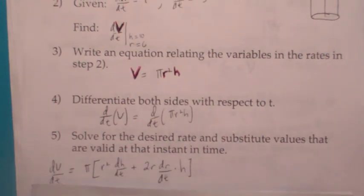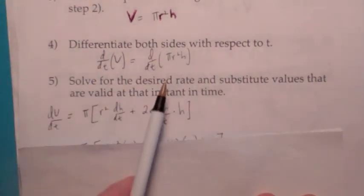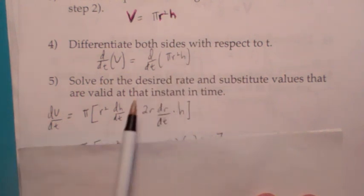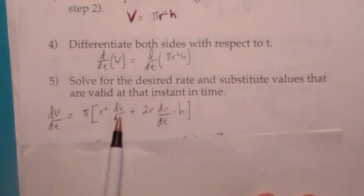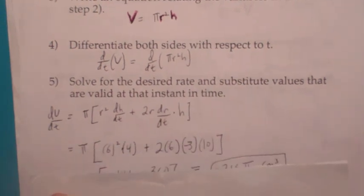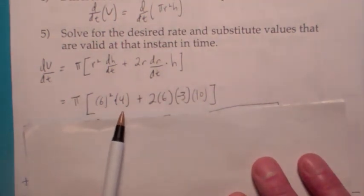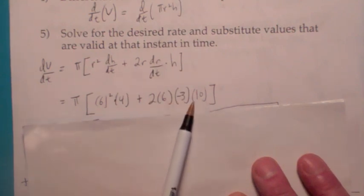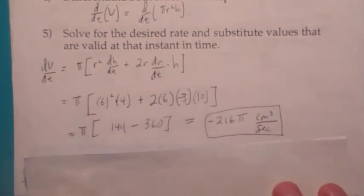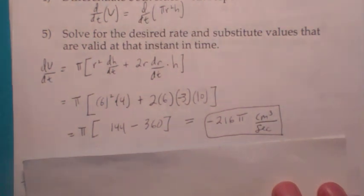Now the pi is going to factor out of the right side. And so when you differentiate r squared times h, it's the first times the derivative of the second, which is dh dt, plus the derivative of r squared, which is 2r times dr dt, times the second. Now this looks like a hard problem, but actually they give you all the information you need. They give you r is 6, dh dt is 4, dr dt is negative 3, and h is 10. So all you have to do is plug everything in and simplify it. You get negative 216 pi cubic centimeters per second.